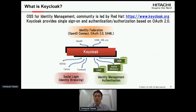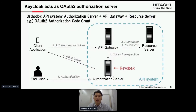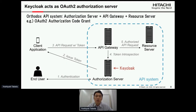Third, identity management and authentication: Keycloak can authenticate users with user storage such as LDAP, Active Directory, and RDB. Keycloak can also act as an OAuth 2.0 authorization server. This figure shows an orthodox API system — it consists of an authorization server, an API gateway, and a resource server. For example, in the case of the OAuth 2.0 Authorization Code Grant, the authorization server authenticates the end user, and after successful authentication issues tokens to the client application: access token, refresh token, and ID token.